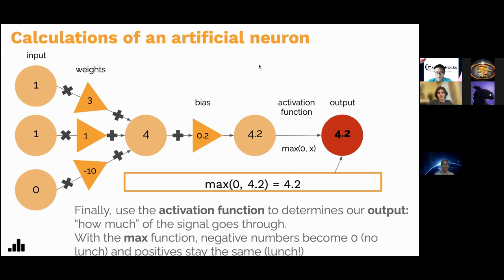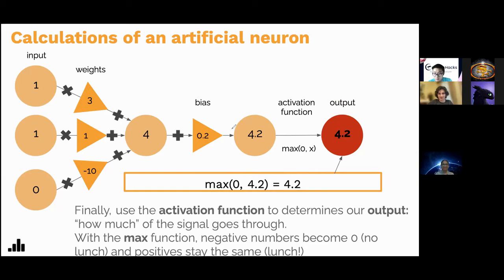What is definitely essential is the activation function. Before generating an output for a particular layer you need an activation function — also known as a non-linearity — to build complexity in your model. We're using the max function between zero and x, also known as ReLU — rectified linear unit. All the max function does is take the bigger of the two inputs: max(0, 4.2) = 4.2. Max(4, 7) = 7. Simple as that.